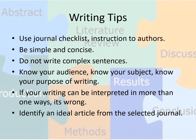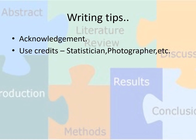Now there are a few writing tips common for all manuscripts and all journals. Every journal has its own checklist and instructions to authors — we should read them beforehand so that we don't make any mistakes. We should be simple and concise and not write complex sentences. We should know our audience, our subject, and more importantly our purpose of writing. If our writing can be interpreted in more than one way, it is wrong and we should rewrite it. It is always better to identify an ideal article from the selected journal and frame our manuscript accordingly. Acknowledgements should be used very liberally — we should give credits to photographers, statisticians, and all those who have contributed, not necessarily as an author.